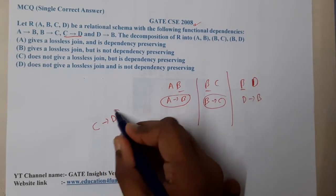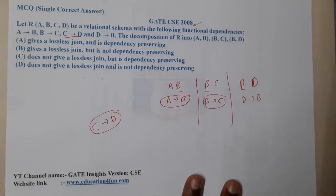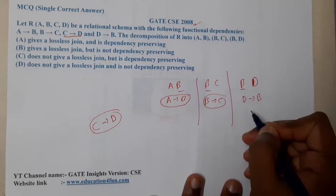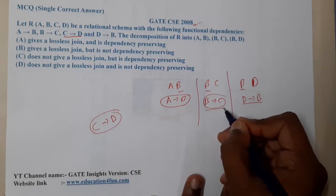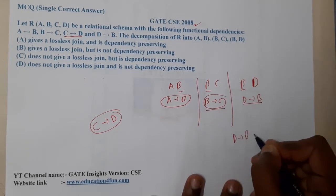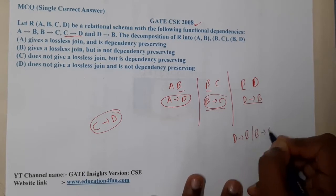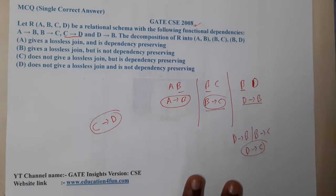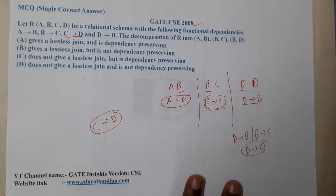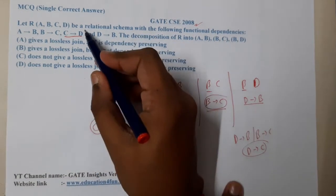The only leftover dependency is c→d. Can we do some manipulation to get this? We have d→b in the BD relation. So d→b and b→c gives us transitively d→c. But we want c→d, so we need c on the left side. Let us try to derive that.